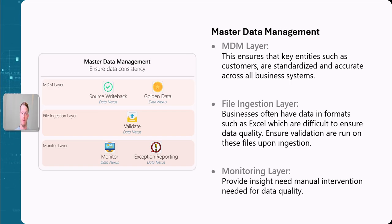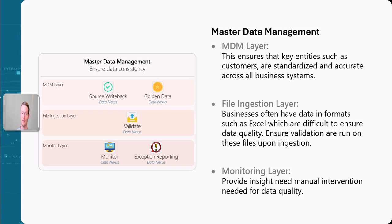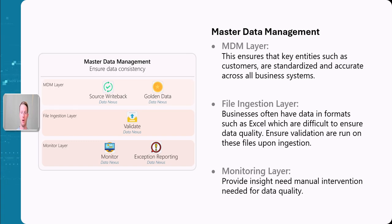Finally, the monitor layer. We want to monitor data quality and monitor the system as a whole. We might also have some exception reporting. A lot of this is automated using AI and rules to try and stop bad data quality, but there will always be some things that need manual intervention. This is where exception reporting comes in — it allows us to view the data quality rules that need to be manually looked at.